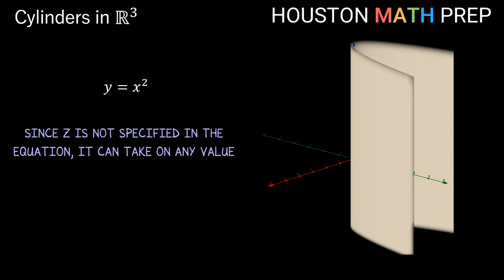It could be positive, negative, zero. So our parabola shape is allowed to run through space forever in the z direction, and this gives us a nice parabolic cylinder. In fact if I were able to look at this cylinder from directly above in the z direction, I would just be looking at that same parabola shape from 2D space.